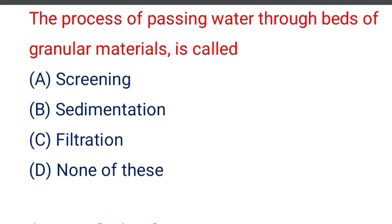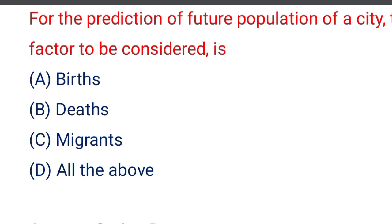Next question: the process of passing water through beds of granular material is called — option A screening, option B sedimentation, option C filtration, option D none of the above. The correct answer is option C, filtration. If the size of the material is very large, that is a screening process. When particles settle down due to gravity, that is called sedimentation. Filtration is the process of passing water through granular material.